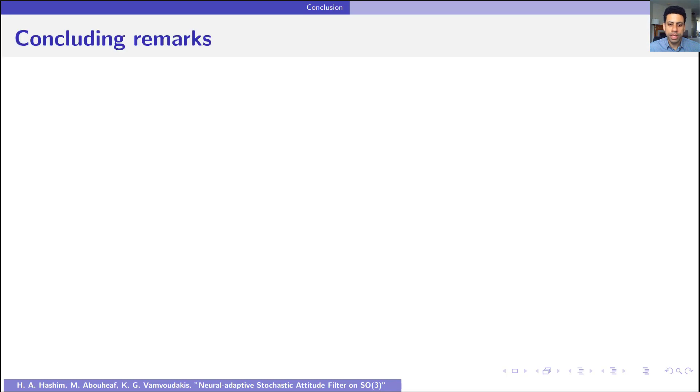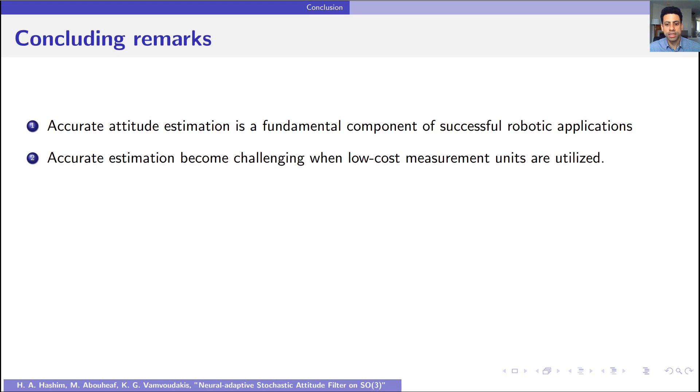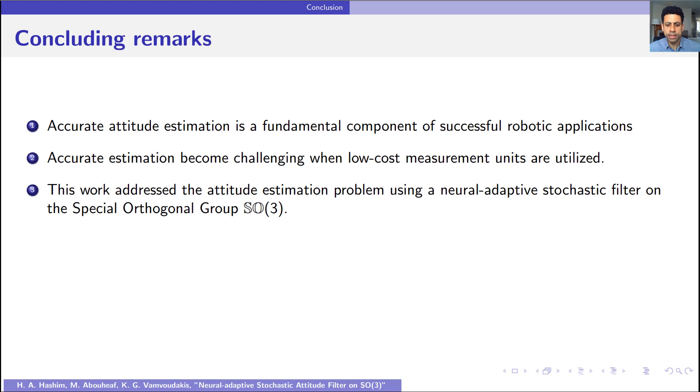Accurate attitude estimation is a fundamental component of successful robotics applications. Accurate estimation is challenging when the system is equipped with low cost measurement units. This work addressed the attitude estimation problem using neural adaptive stochastic filter on the special orthogonal group of order 3, or SO3.